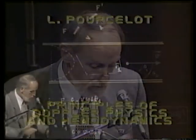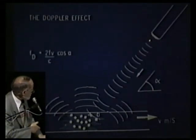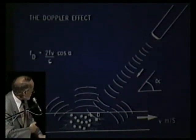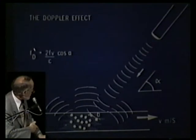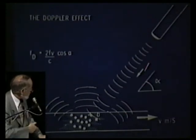This formula is the general formula. When the receptor and the transmitter are very close to each other, it is simplified and we can write: Doppler frequency equals f times v over c times cosine alpha times cosine theta, where theta is the mean angle between the probe and the axis of the vessel.